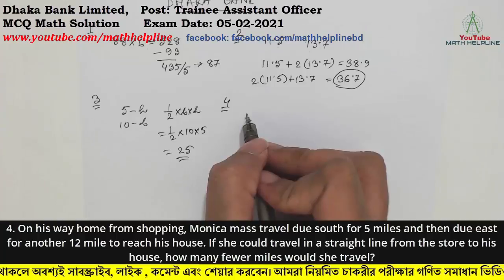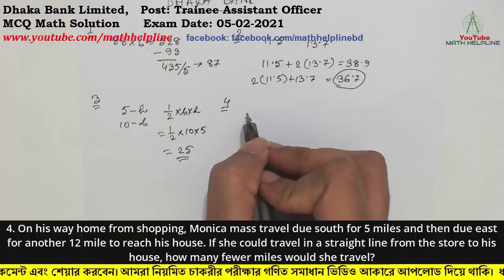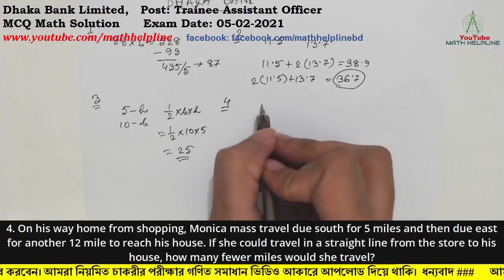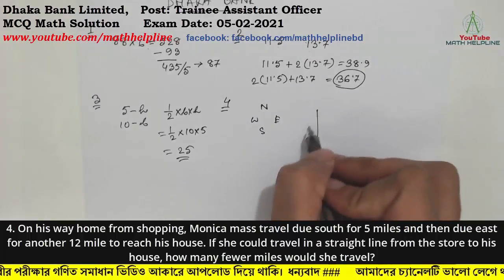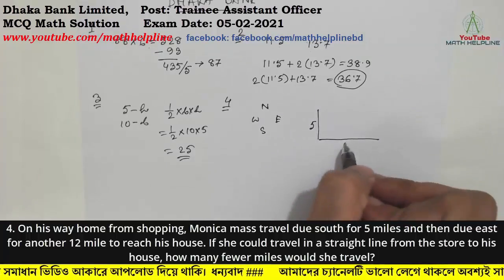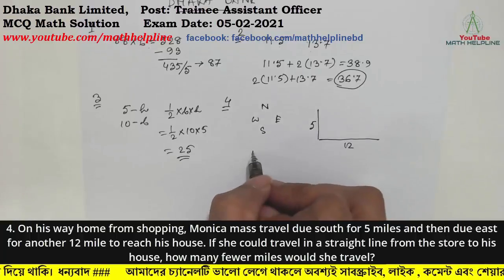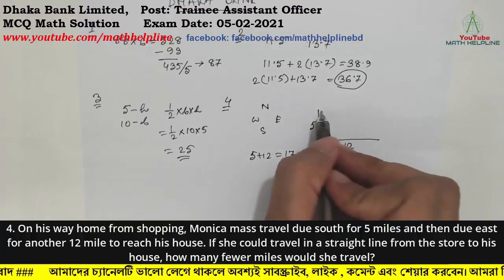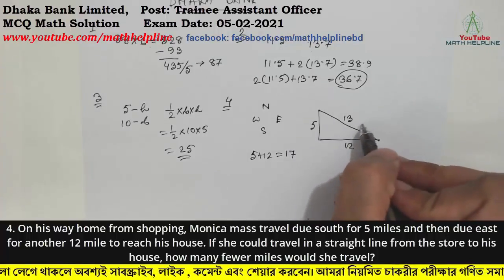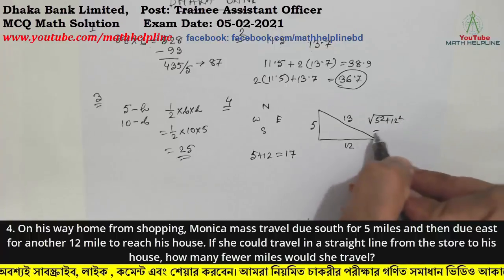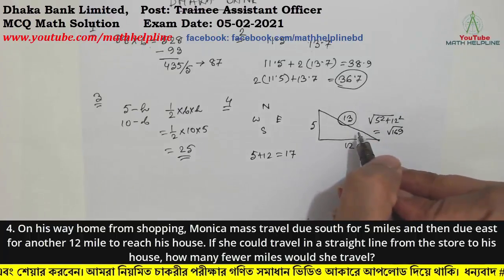If she would travel in a straight line from the store to his house, how many fewer miles would she travel? Using the Pythagorean theorem, we calculate the diagonal distance. The square root calculation gives us 169, which equals 13. So the straight-line distance is 13.